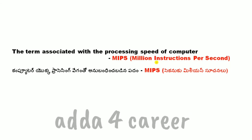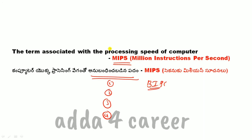The term associated with the processing speed of a computer: MIPS stands for Millions of Instructions Per Second, and BIPS stands for Billions of Instructions Per Second. The answer here is Millions of Instructions Per Second.